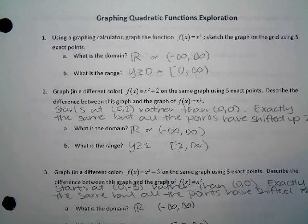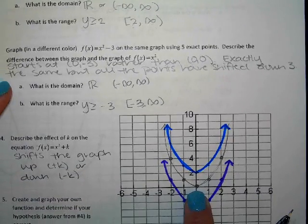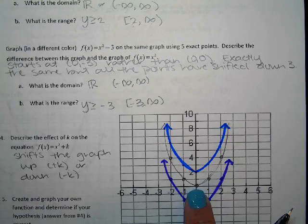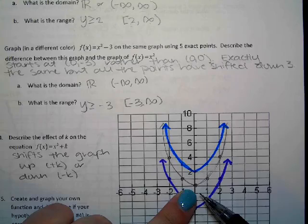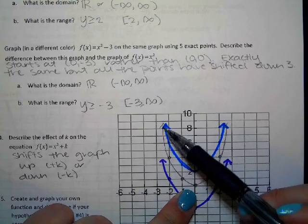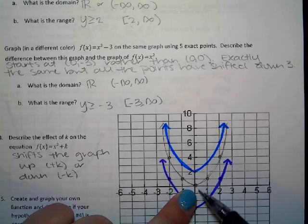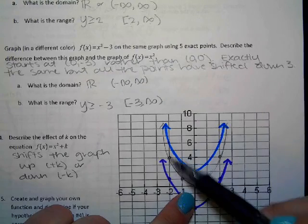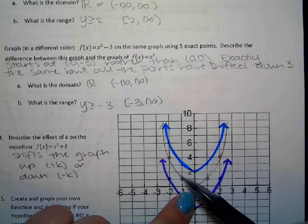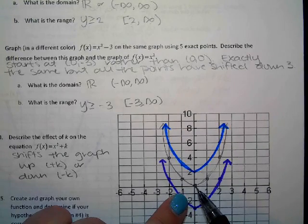If we go back to number one, we had drawn in pencil Y equals X squared. One of the things we didn't do was talk about the word 'vertex.' The word vertex is not specific to a quadratic equation. A quadratic equation has this U-shaped graph — a U-shaped graph is described using the word parabola. Have you guys heard that word before?